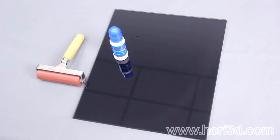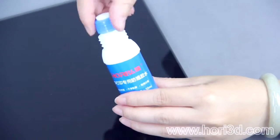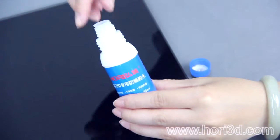First, ensure the glass plate is clean and dry. Second, twist open the glue bottle cap and remove the inner lid.